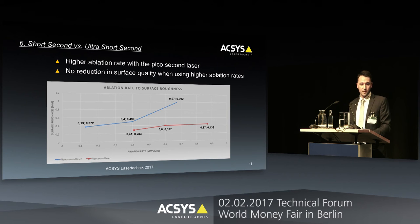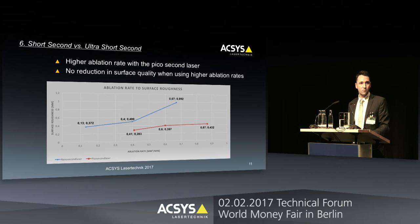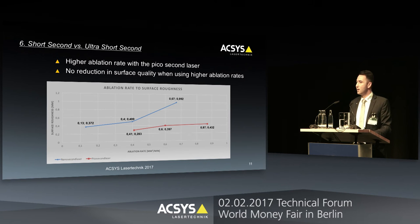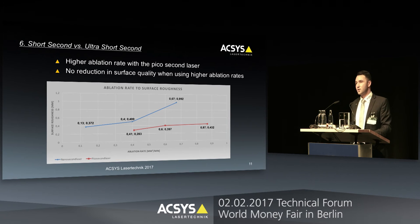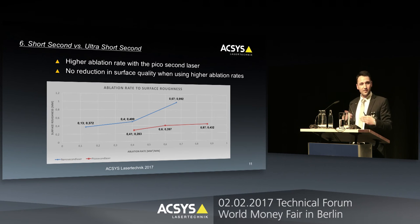Now let's assemble all this information. The blue line is the nanosecond laser and the red line is the picosecond laser. On the left axis, we see surface roughness in microns — a lower number is better, meaning a smoother surface. On the bottom axis, we have the ablation rate — a bigger number is better because it results in faster engraving. For the nanosecond laser, as the ablation rate increases, surface quality quickly gets very poor. For the picosecond laser, it stays approximately the same, with only a slight increase, while maintaining a very high ablation rate.